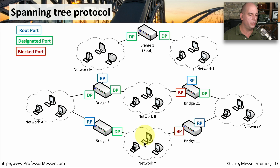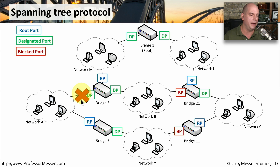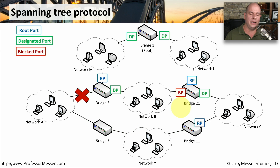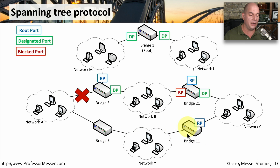But what if we have a problem? What if during that particular operation of the network, we have an interface that suddenly is no longer available? Maybe someone has unplugged the wire or a bridge has gone down. In that particular case, we no longer have our path down to network Y. At this point, spanning tree goes into a converged mode where it tries to understand what has happened on the network and create a better path down to all of the different network segments. So Bridge 5 has gone into this converged mode, and you can see Bridge 11 has as well, because the blocked port is no longer there.